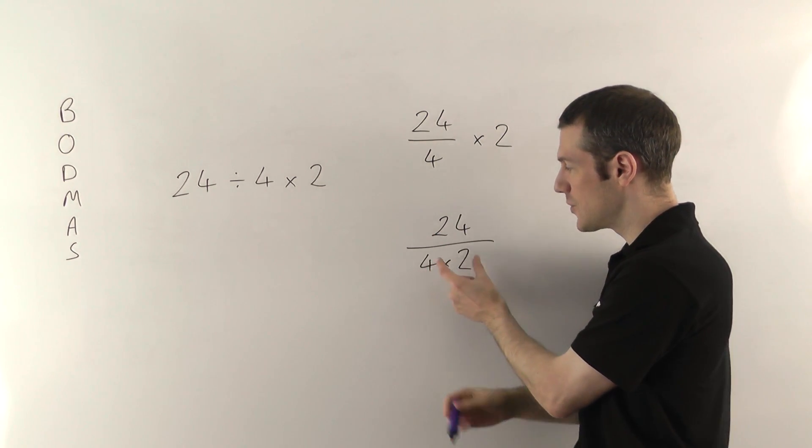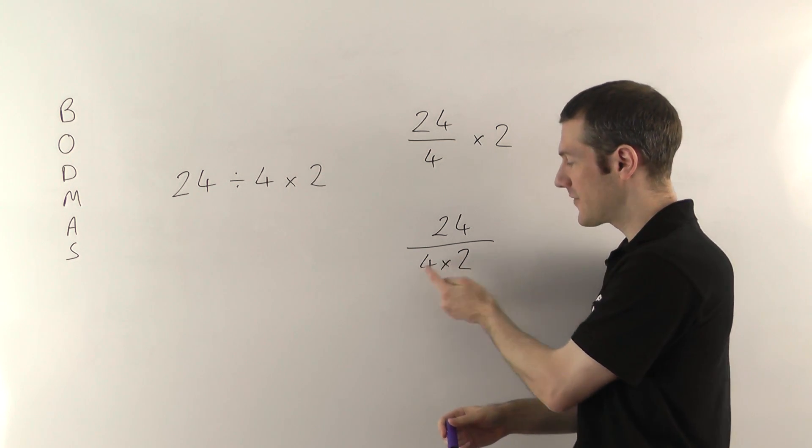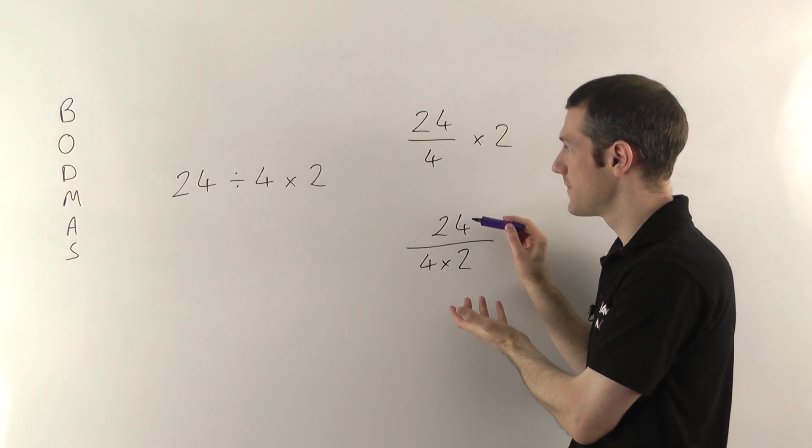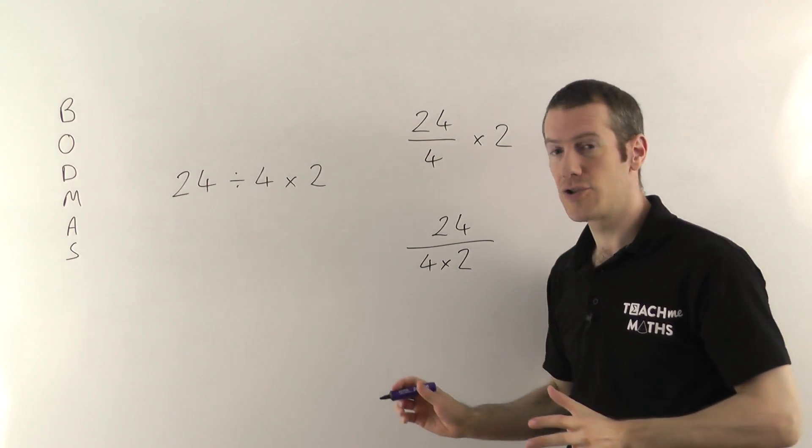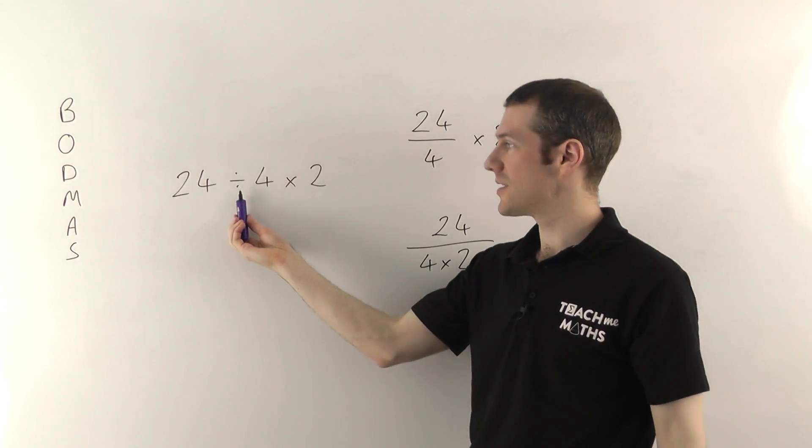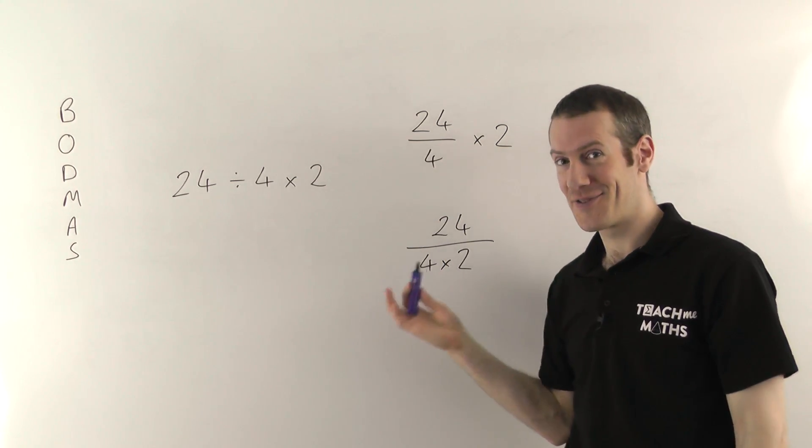So in this one it's clear you work out the fraction and then times it by 2. But in this one you can see the 4 times 2 is on the bottom of the fraction. So you have to work out what that is before you can then divide the numbers to figure out what the fraction is. So there's never any confusion when you use the fraction sign and that's why we prefer it.